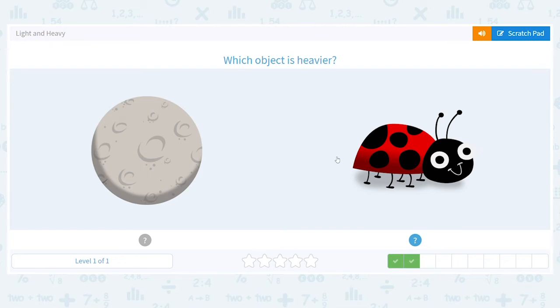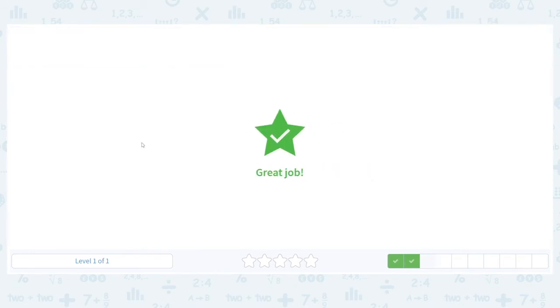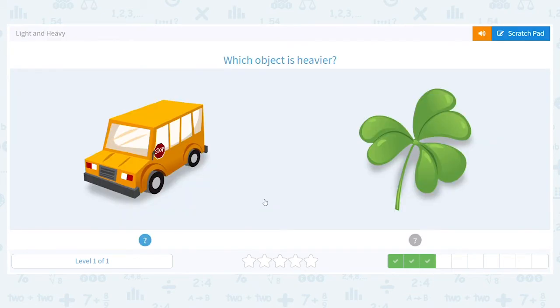Think about what you just did with the first two questions. We had a train that was heavier and a plane that was heavier. So looking at the moon and the ladybug, which one is going to be heavier? Compare it to the other two objects that were heavier from the last two questions. It should be moon. Keep up the awesome job, guys.